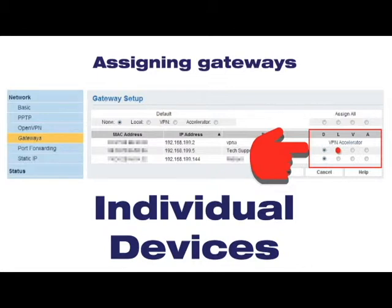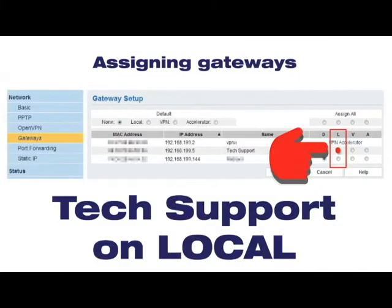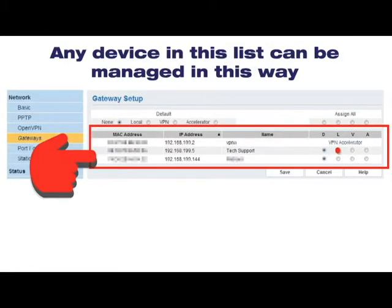Any devices added to your network will automatically be put on the default setting. For individual device settings, click on the radio button next to that device in the gateway column of your choosing. For instance, here we are assigning tech support to local internet by clicking in the circle under the L column. Click Save. Any device in this list can be managed in this way.